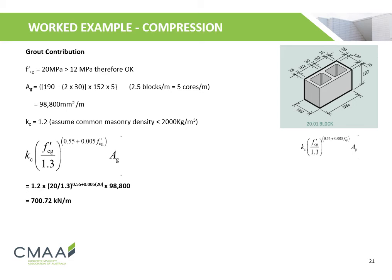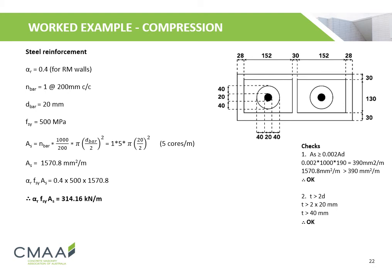The strength contribution provided by the grout is calculated. The grout strength is 20 MPa. There are 5 cores per meter, and the grouted area is calculated to be 98,800 mm² per meter. The strength factor for grout is calculated to be 1.2, and thus the strength contribution provided by the grout is calculated to be 700.72 kN per meter.